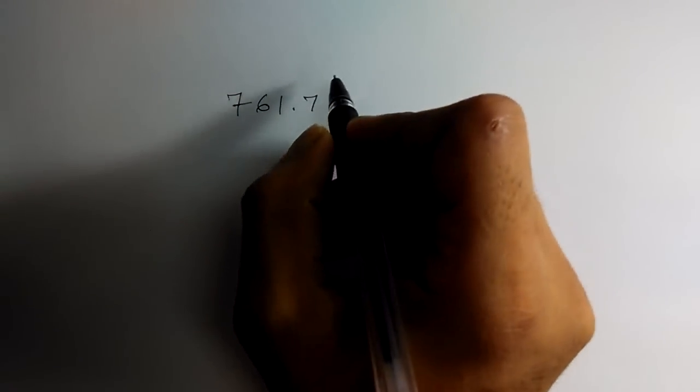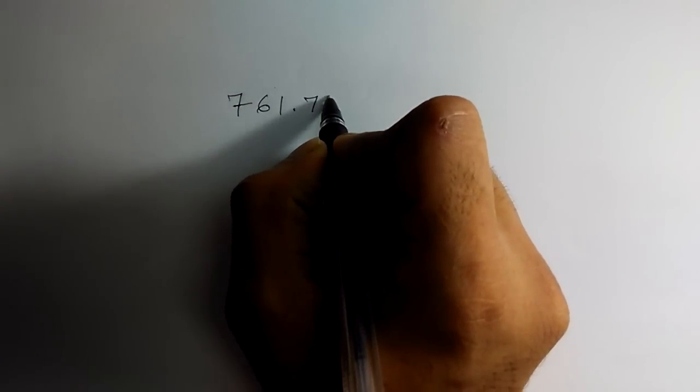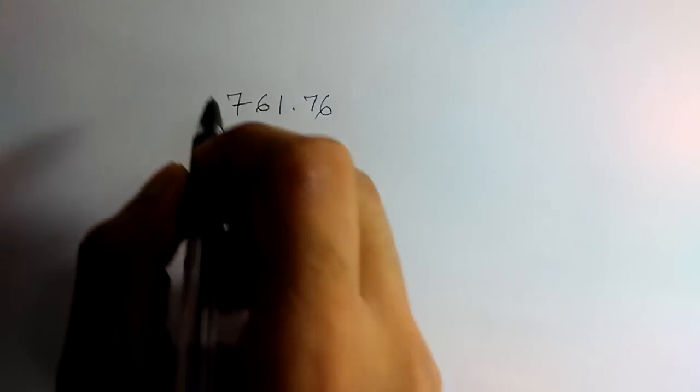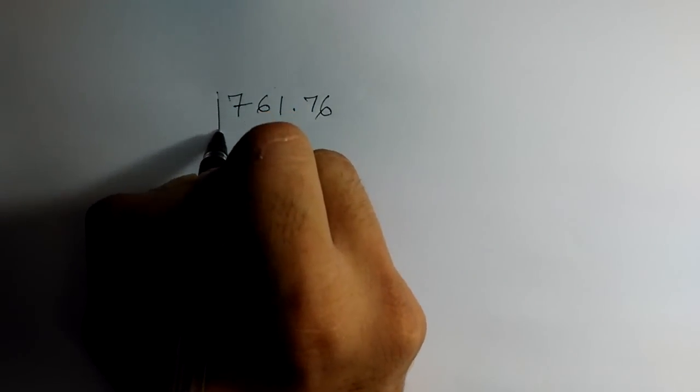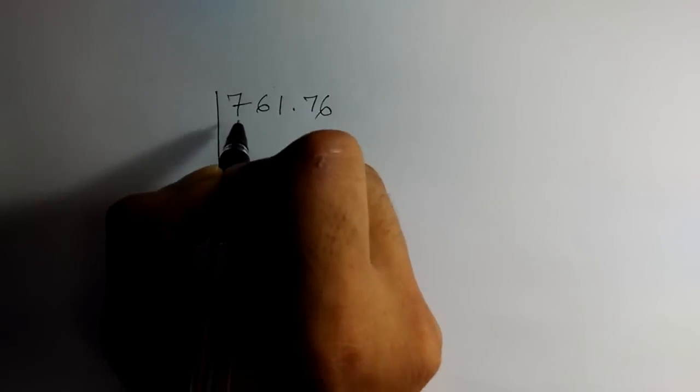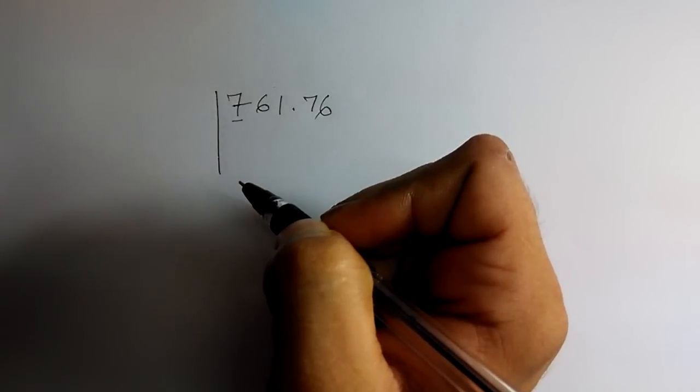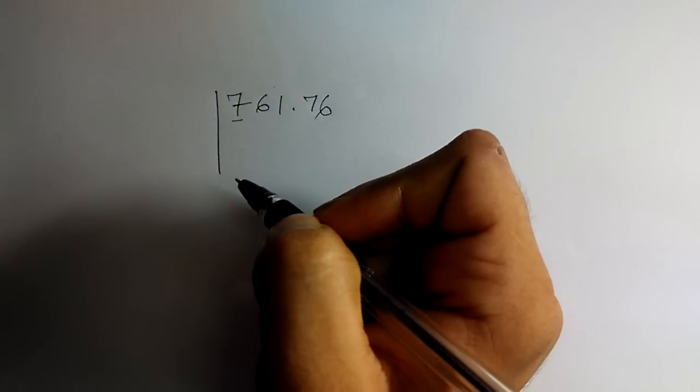Hey guys, welcome to Exam Tricks. Today we are going to learn the square root of decimal numbers. Let us take an example and say 761.76. So first we have to focus on this 7, we have to take a number that can divide by multiplying itself.